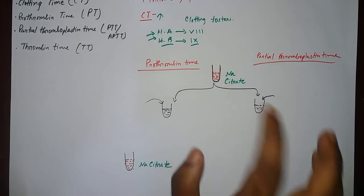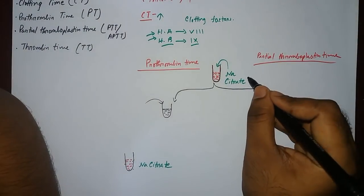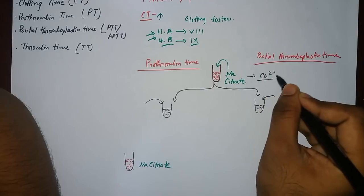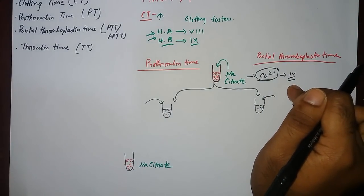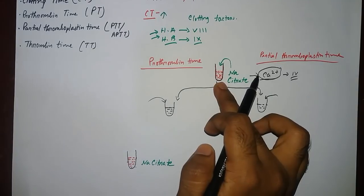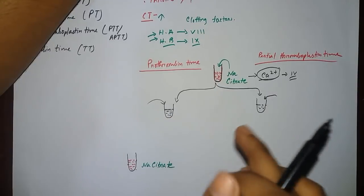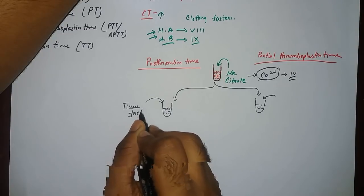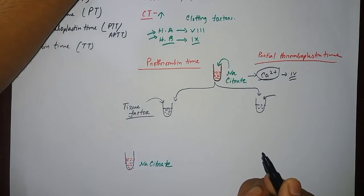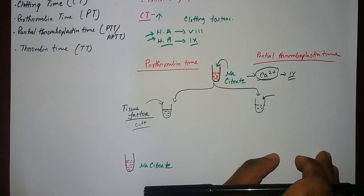In prothrombin time, we take a test tube containing blood and mix it with sodium citrate. Sodium citrate is added because it inactivates the calcium ion — calcium ion is factor number 4 — which is needed for a blood clot to be formed. So in the absence of calcium, no clot is formed. We then centrifuge this blood, take the plasma into a separate test tube, and add tissue factor along with calcium, which starts the extrinsic pathway.